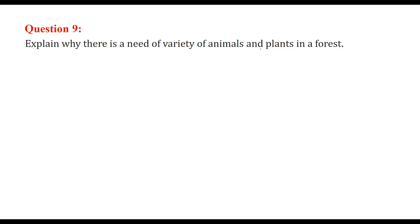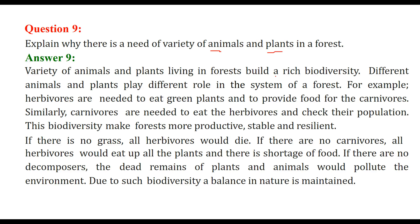Next question: explain why there is a need for variety of animals and plants in a forest — that means we are talking about biodiversity. A variety of animals and plants living in a forest build a rich biodiversity, which is very important. Every plant and animal has a role. Herbivores are needed to eat green plants and to provide food for the carnivores. Carnivores eat the herbivores and check that the herbivore population does not increase beyond a level. Biodiversity makes forests more productive, stable, and resilient.